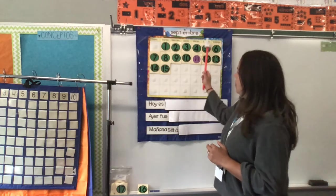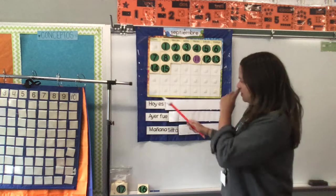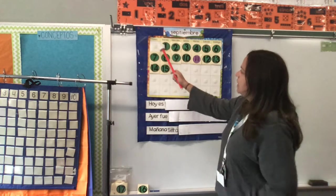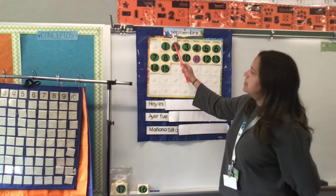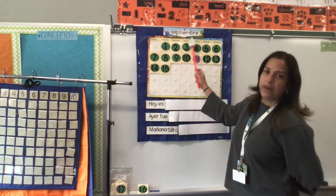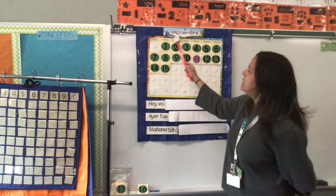So, el calendario, it's a square piece that has at least 30 other squares. And in the top of the calendar, we usually can see the month of the year. Ahora estamos en el mes de septiembre. Estamos en septiembre.